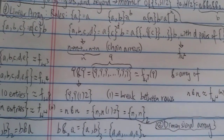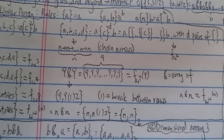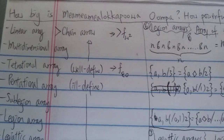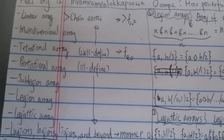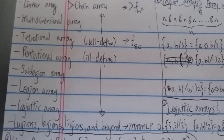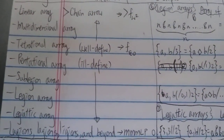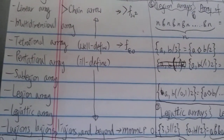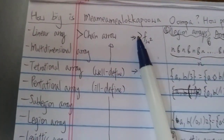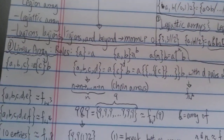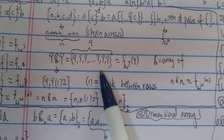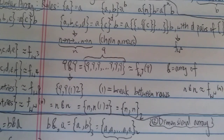Many people ask: can BEAF be used to represent TREE(3) or SCG? I guess if you count the ill-defined section it actually could. I told you before that chain arrow or up-arrow can never be used to represent TREE(3) because it's just way too weak, but this crazy thing actually can — so this gives you a quick idea of how crazy BEAF is.